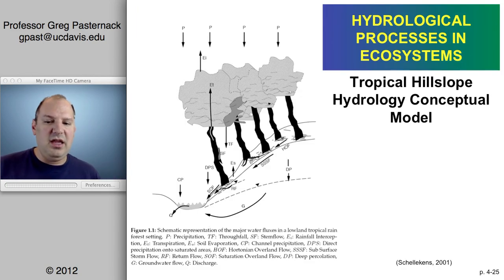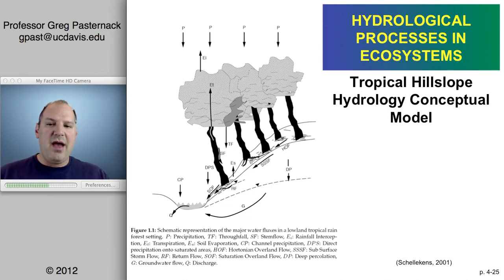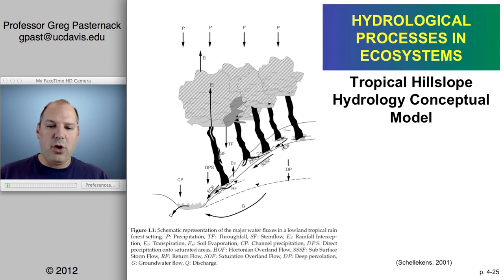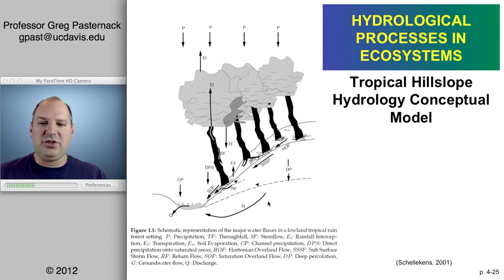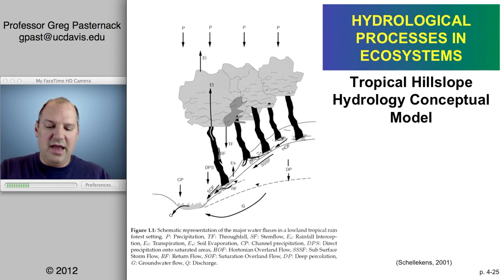In summary, it doesn't really matter where we are in a forest, but especially in a tropical forest, we have a range of processes: precipitation, evapotranspiration, through-fall, stem flow, Hortonian overland flow, shallow subsurface flow, and where the groundwater table meets the surface, saturation overland flow — as the primary fluxes taking place. I'm going to stop here to end Part 1, and we'll continue with Part 2. Thank you.